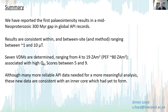In summary, we've reported the first paleointensity results in a mid-Neoproterozoic 300-million-year gap in global records. Results are consistent within and between sites and methods, ranging from 1 to 10 microteslas. Seven VDMs are determined ranging from 4 to 19 ZAm², compared to the present-day field of around 80 ZAm², and are associated with high QPI scores between 5 and 9. Although many more reliable paleointensity data are needed for a more meaningful analysis, these new data are consistent with an inner core that had yet to form.